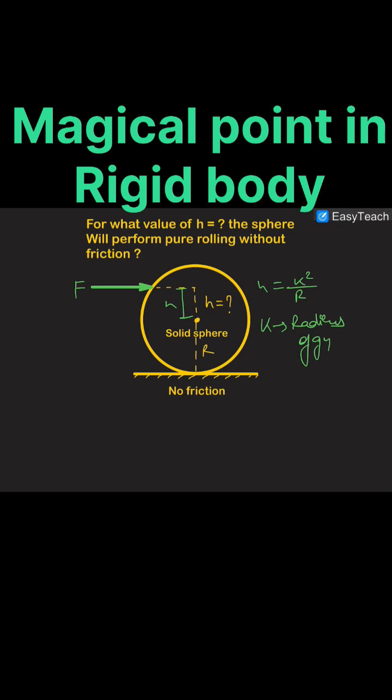Now if you will apply this force at this point, then any object will roll without friction. The only necessary fact is that you should apply this force above the center so that it could create a clockwise torque.